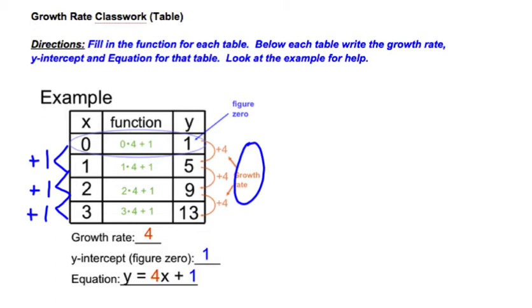We also want to know what the y value is when x is 0. The y value in this table when x is 0 is 1, that's the value with figure 0. We can go down below the table and fill in that information. The growth rate is 4, the y-intercept or figure 0 is 1. For the equation, remember that we can write it as y equals 4x plus 1.